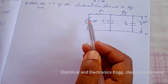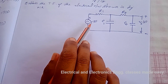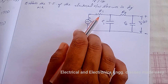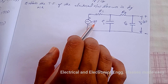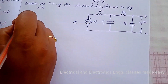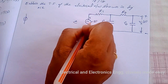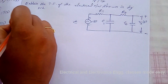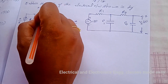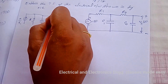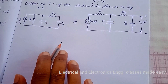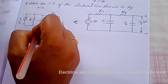To apply KCL, we have to convert e(t) into a current source, that is, convert this voltage source into a current source. This voltage source is in series with resistance R1, which we convert into a current source in parallel with the resistor. After converting, we get a current source with value e/R1, and R1 is in parallel with C1, then R2, and then C2.